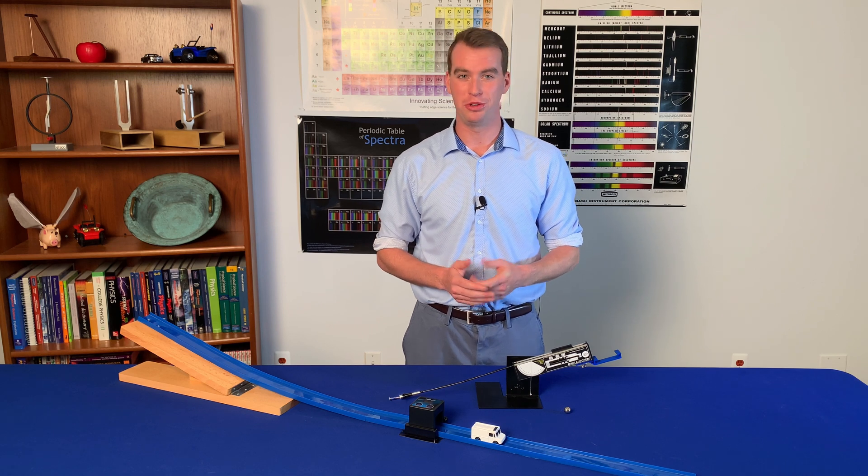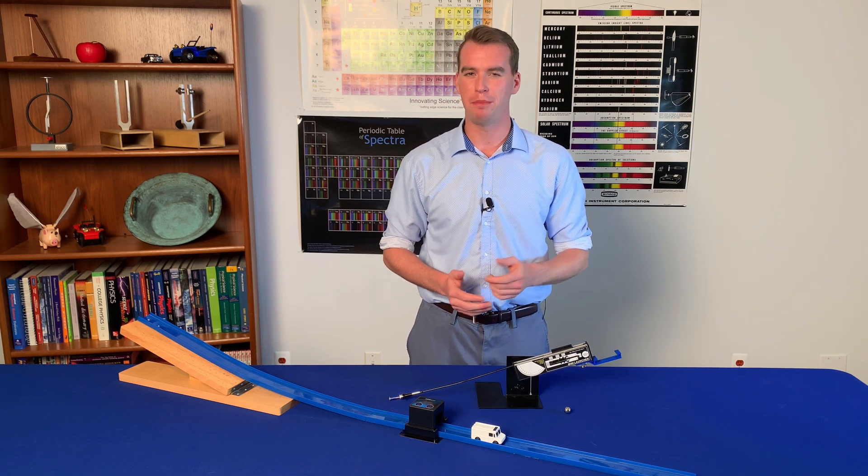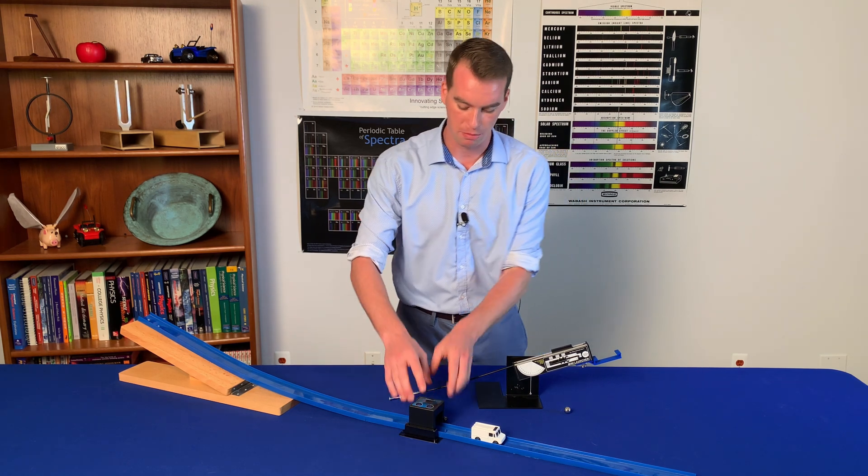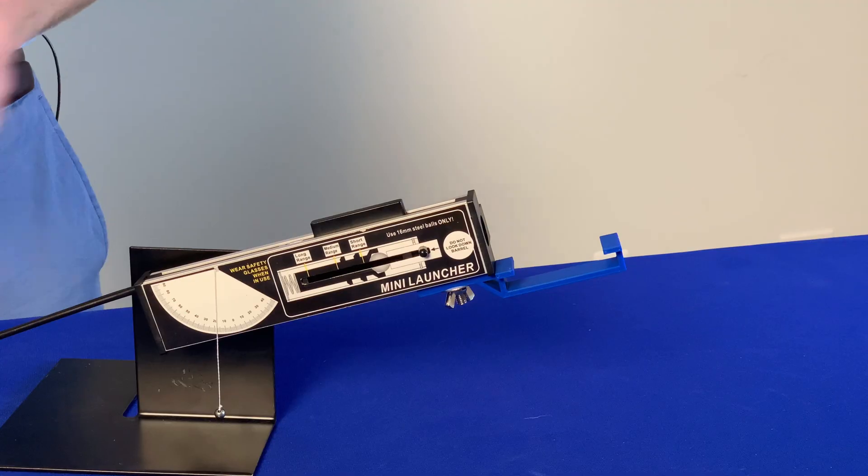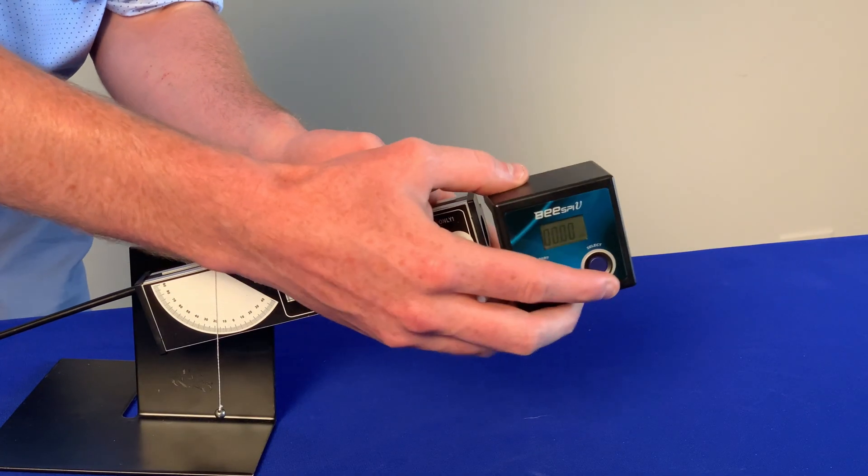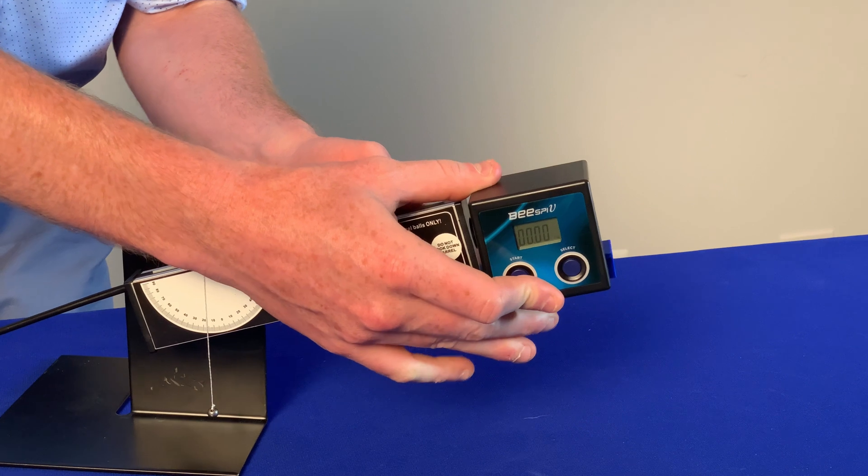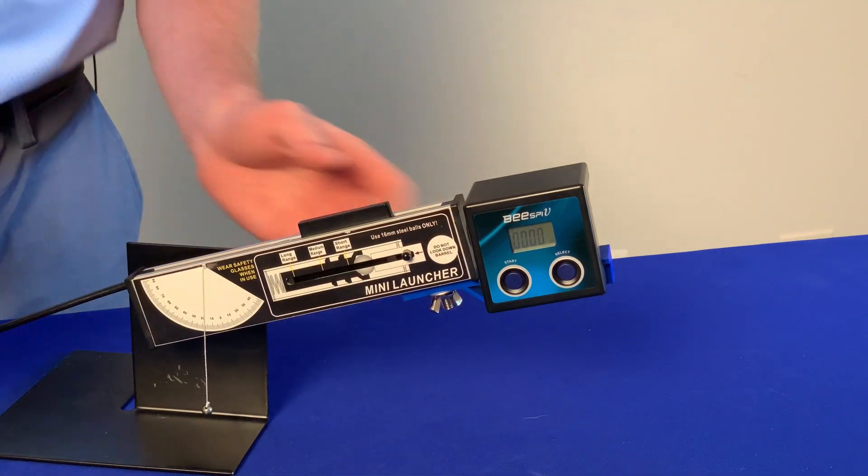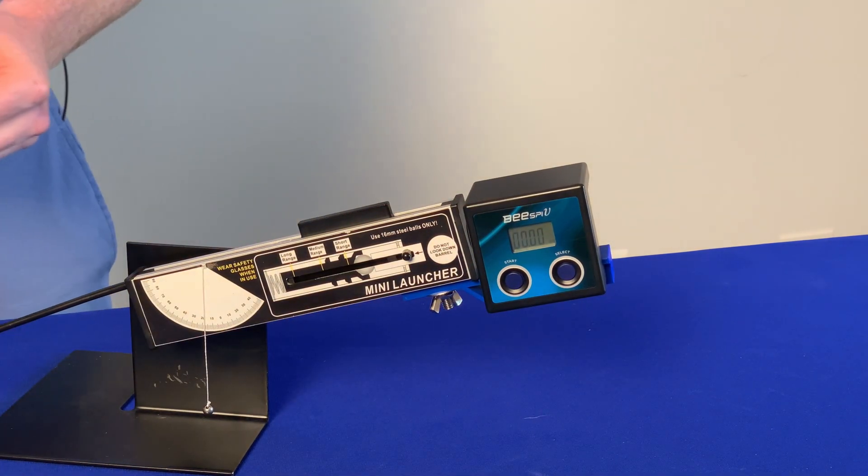All right now I'm going to show you how you can use the BSP in a projectile motion experiment. So we're just going to move the BSP over we're going to fit it right into this 3D printed adapter that we made for our mini projectile launcher where we can use it to measure the initial velocity of each launch.